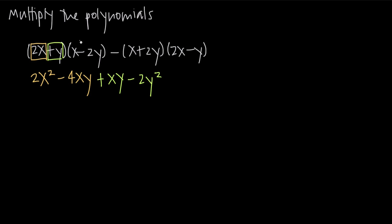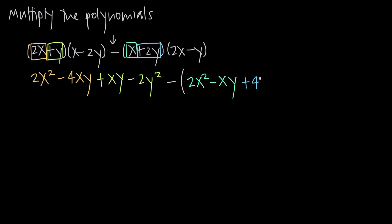Now that we've multiplied every term in the first polynomial by every term in the second polynomial, that takes care of this first group. Then we keep our subtraction sign and multiply every term in x plus 2y by every term in 2x minus y. It's important to put in big parentheses here because this subtraction sign needs to apply to the entire result. So x times 2x gives us 2x squared, x times negative y gives us negative xy, positive 2y times 2x gives us positive 4xy, and positive 2y times negative y gives us negative 2y squared. Then we close our parentheses.